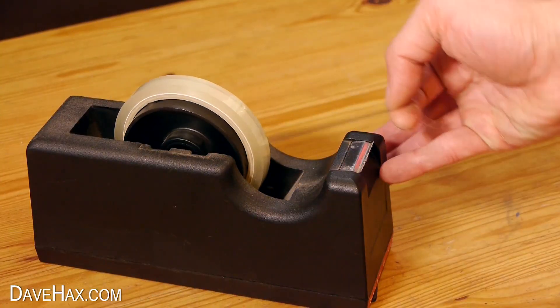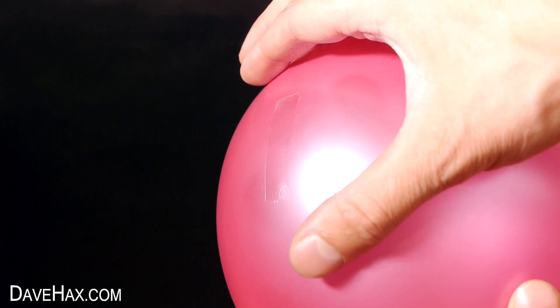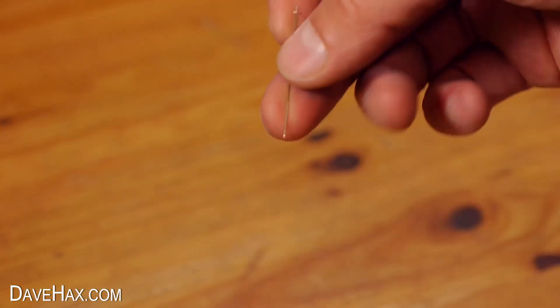For the next experiment I'm going to take a piece of tape and stick it to the surface of a balloon like this. This is going to allow me to push some sewing needles straight into the balloon without popping it.